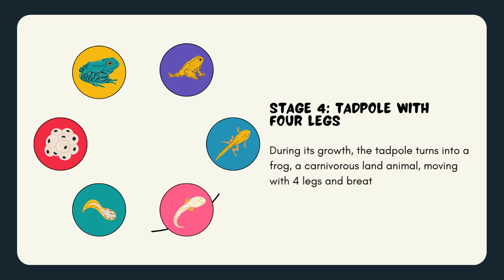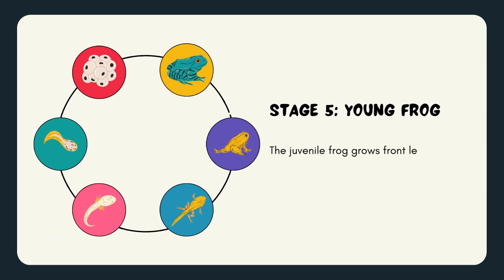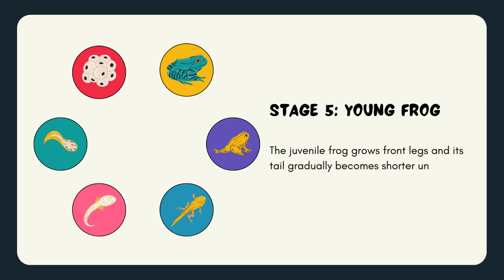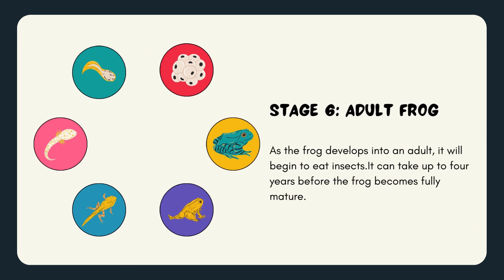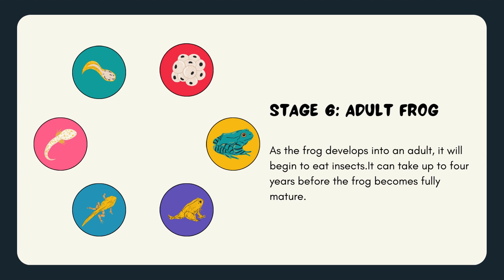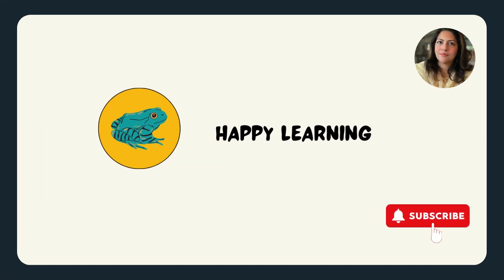Stage 5: the juvenile frog grows front legs and its tail gradually becomes shorter until it is no longer there. Stage 6: as the frog develops into an adult, it will begin to eat insects. It can take up to four years before the frog becomes fully mature. Happy learning, bye bye!